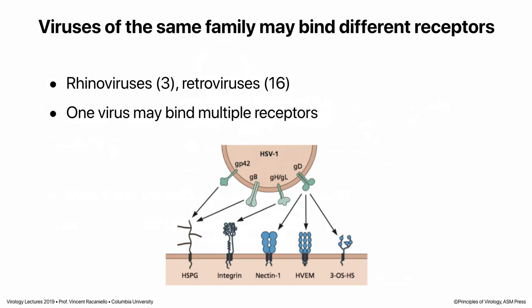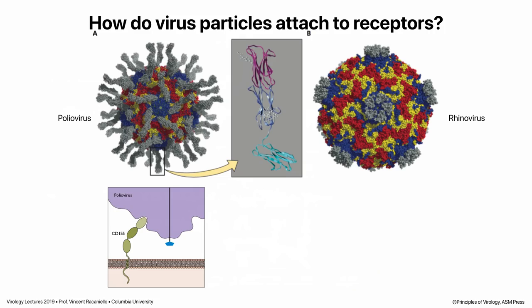Sometimes viruses of the same family bind different receptors. Rhinoviruses bind three different receptors depending on the type. And some herpes viruses bind many different receptors — here's herpes simplex virus type 1, where there are many glycoproteins in the virus particle that interact with a number of cell surface molecules. So it's not just a one-on-one relationship; you can have different permutations.